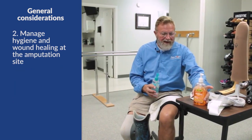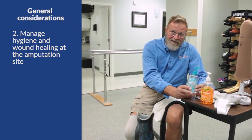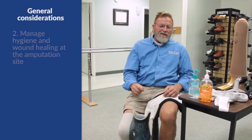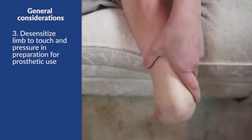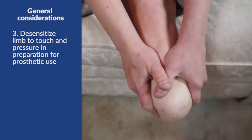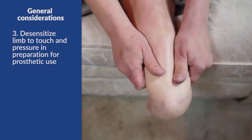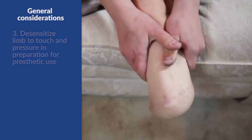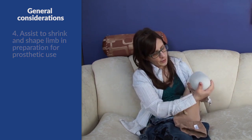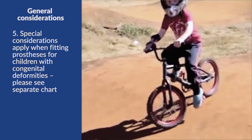Phantom pain may be minimized by distal contact of the stump with the socket or the prosthetic. Two is to manage hygiene — wound healing at the amputation site, making sure it's clean, preventing ulcers, and getting the site ready for the prosthesis. We want to desensitize the limb to touch and pressure in preparation for prosthetic use, as the patient might feel tingling, numbness, or sensitivity. We also want to shrink and shape the limb for the prosthetic socket.